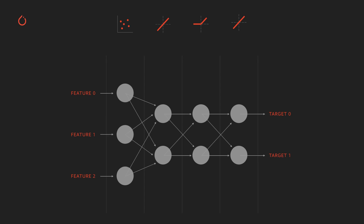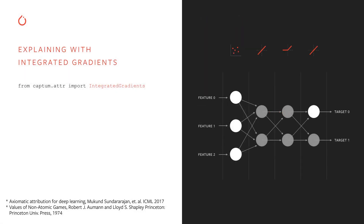Now I'd like to walk you through a simple neural network and demonstrate how we can apply model interpretability algorithms from Captum on it. This network takes an input of three features followed by a linear layer, ReLU, and an output of two targets. Let's say we'd like to attribute target zero to the input features. To do so, we choose integrated gradients and import it from the captum.attr package. Integrated gradients is similar to the Aumann-Shapley method from cooperative game theory for infinite games and non-atomic measures, where each feature is an infinitesimal subset of the feature space.